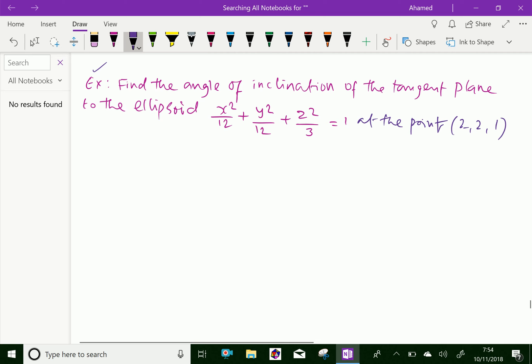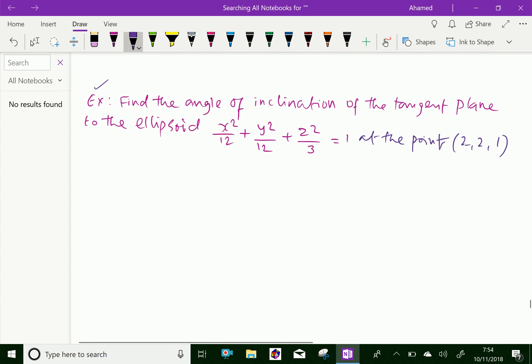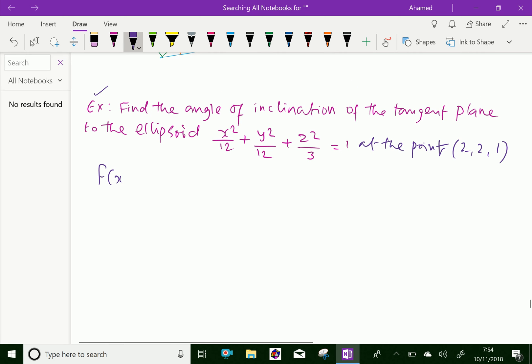Now, the function F(x, y, z) equals X²/12 + Y²/12 + Z²/3 - 1.